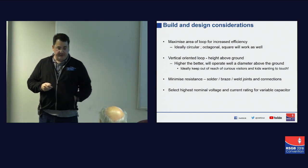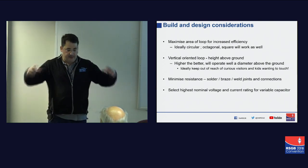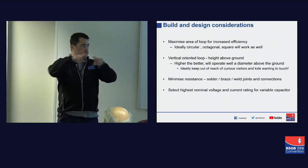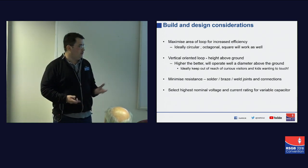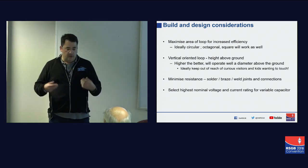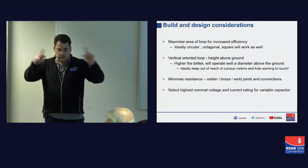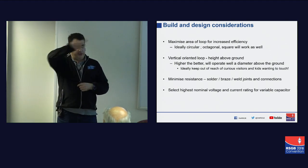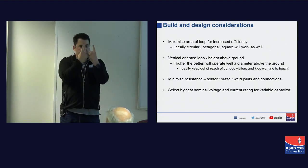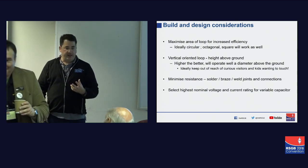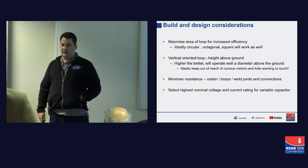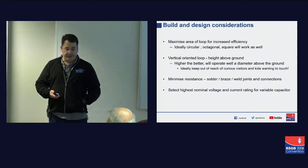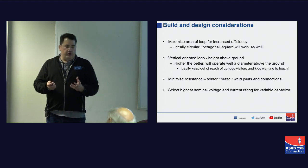A couple of things to bear in mind: you really do want to maximize the area inside of the loop. The easiest loop construction is a square loop — you minimize the number of joints if you're using copper pipes. With four 1.25-meter lengths — a five-meter loop — you're going to have an elbow on each corner, so a minimum of 10 to 12 connections. You want to reduce the number of connections where possible because every connection introduces the possibility of resistance.